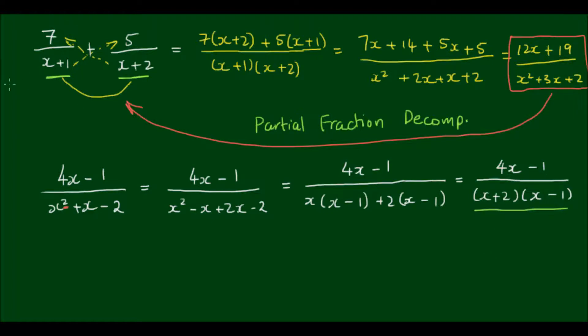Okay, so this now I can write as the addition of two partial fractions. So 4x minus 1 divided by (x+2) times (x-1) is equal to some constant A divided by (x+2) plus another constant B divided by (x-1).